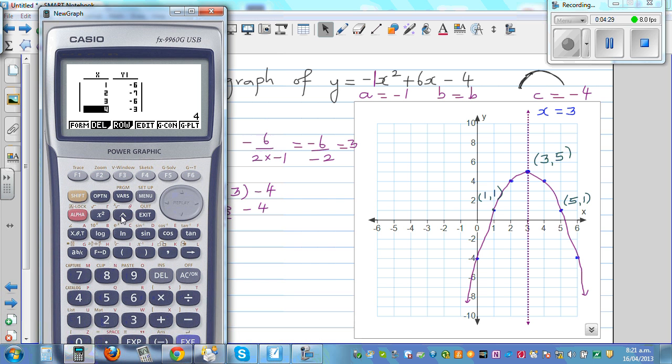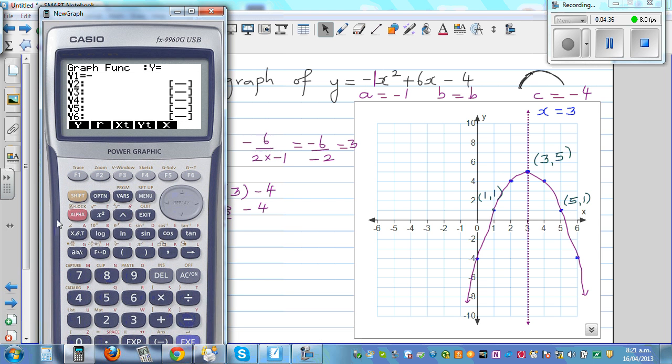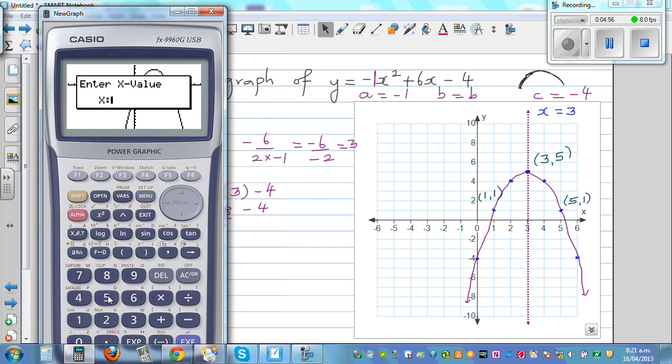So go to graph and type in the equation minus x squared plus 6x minus 4 and then graph it. So first this is called the maximum, g sol maximum, 3 comma 5. And then you can find the y calc when x is 5, when x is 5, y is 1. And then x is 1, y should be 1. So again, y calc when x is 1, y is also 1.